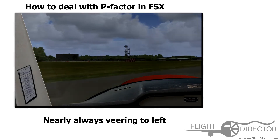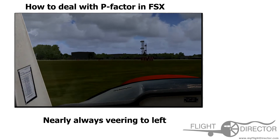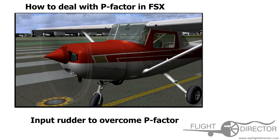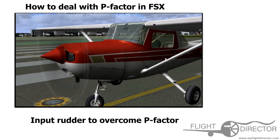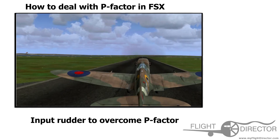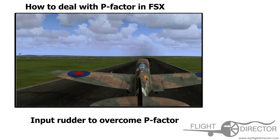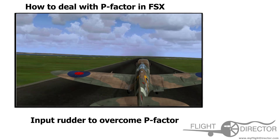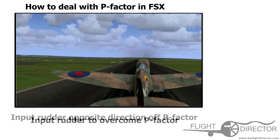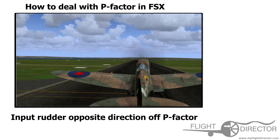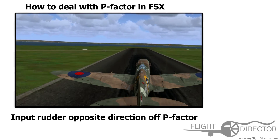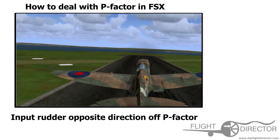There are a few ways you can overcome this problem. Most obviously is inputting rudder, because rudder controls your nose wheel and the rudder situated on the tail. You're going to want to steer in the opposite direction to the way the plane's pulling. So if it's pulling to the left, you put a bit of right rudder in. If it's pulling to the right, you put a bit of left rudder in.